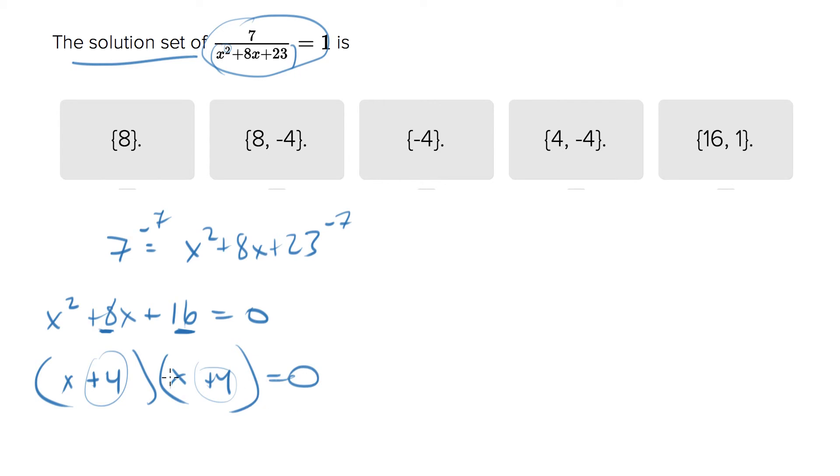If I multiply them I get 16, if I add them I get 8. That's perfect. So now when we say the solution set, it's any number, so this equals 0. Any number that makes one of these 0 will make this statement true, this equation true.